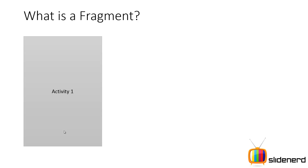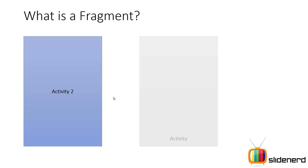Here I have an activity, Activity 1. When the user clicks on the activity or performs some action with it, eventually at some point he's going to go to Activity 2. This used to be the traditional navigation model before Android 3.0. After Android 3.0, let's see how things have changed.